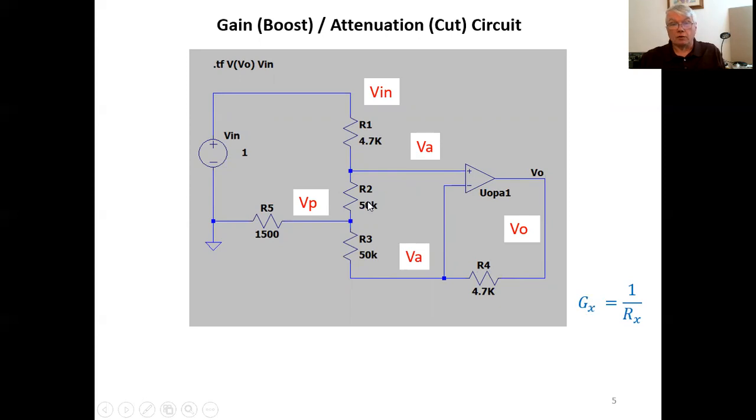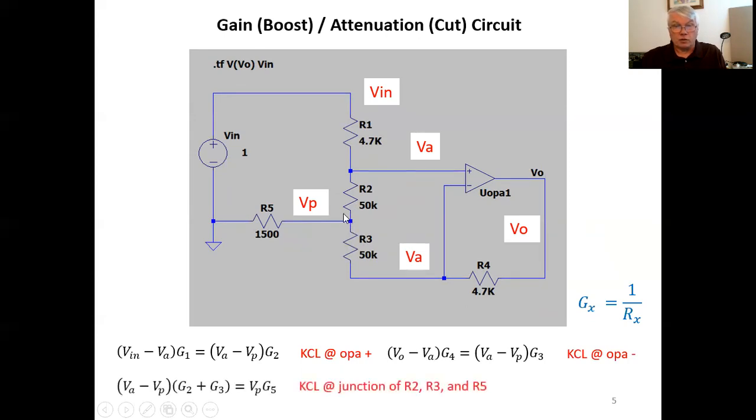So let's do Kirchhoff's current law at the op amps non inverting input. v in minus v a times the conductance g one is the current entering this node. And that has to equal the current leaving, which is v a minus v p times g two. The op amp itself draws no current. At the inverting input, we have v out minus v a times g four equals v a minus v sub p times the conductance g two plus g three equals v p times g five.